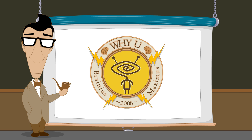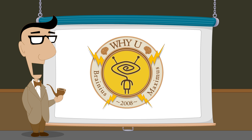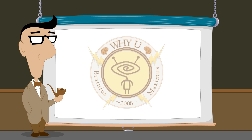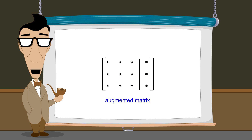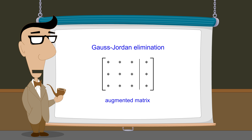Hello, I'm Professor Von Schmohawk and welcome to Why U. In the last lecture, we saw how an augmented matrix can be simplified through the process of Gauss-Jordan elimination. This is accomplished by performing a sequence of elementary row operations which simplify the matrix one entry at a time until the matrix is in reduced row echelon form.